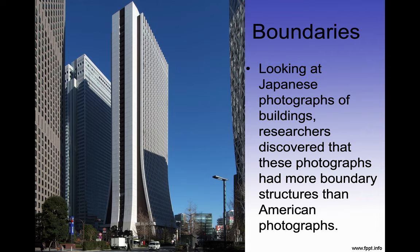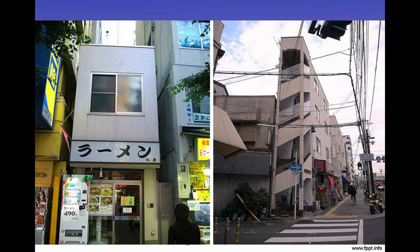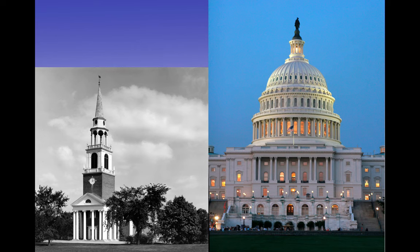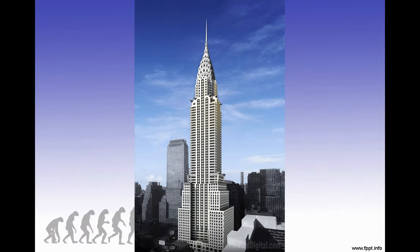Looking at Japanese photographs of buildings, researchers discovered that these photographs had more boundary structures than American photographs. Physical landscapes from Japan are literally busier than landscapes in the United States. In contrast, American pictures — like the U.S. Capitol or a church — have a lot less context. That's the Chrysler Building in New York City — less busy, cleaner backgrounds.